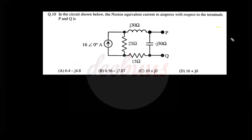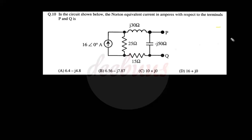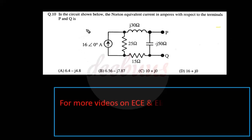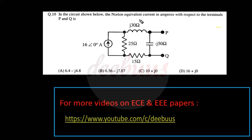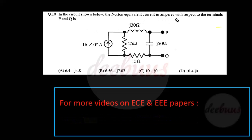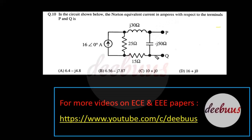Welcome to another discussion on GATE Electronics and Communication network-related papers. Here we are checking GATE 2011, moving to the first question: in the circuit shown below, the Norton equivalent current in amperes with respect to the terminals P and Q is — so we have to calculate the Norton current.